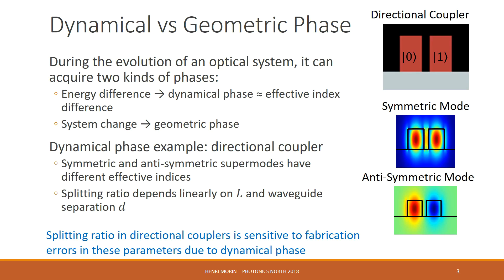Before I get to what geometric phase is specifically, I have to talk about the difference it has with dynamical phase. During the evolution of an optical system, it can acquire two kinds of phases. The first being dynamical phase, which arises from an energy difference within the system, and in a waveguide system, this reduces to an effective index difference. And you can have a geometric phase, which arises from a global system change.